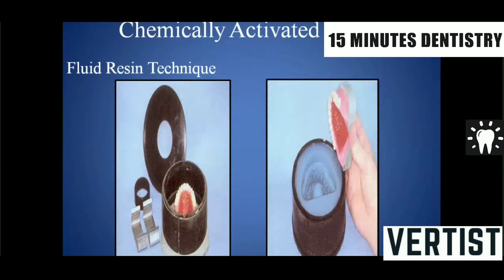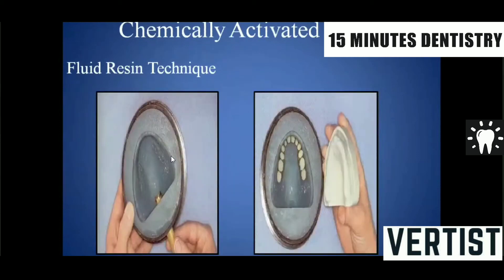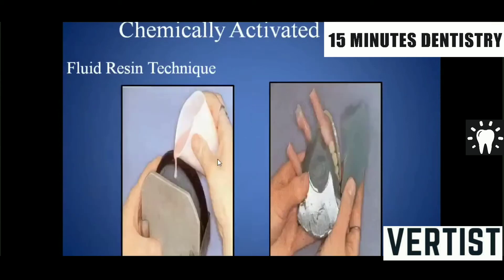For fabricating a denture with chemically activated resin, the fluid resin technique can be used. A specialized flask is used with agar as a duplicating material. After duplication of the cast, a vent channel is created to fill the resin. The teeth are properly aligned in the mold cavity, fluid resin is poured through the channel, and after removal of the reversible hydrocolloid agar, the finished denture is obtained.